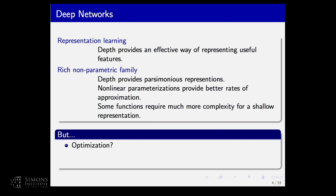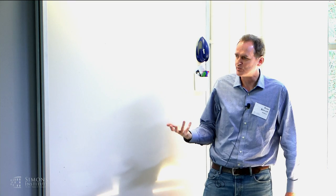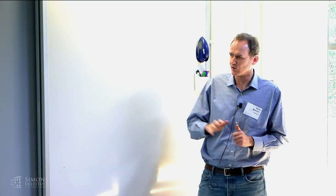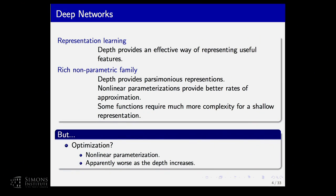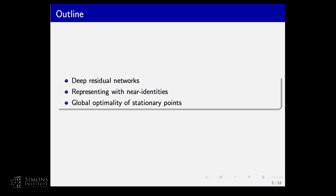The flip side is the optimization issue: if we have a training set and want to choose parameters to perform well on it, having parameters appear nonlinearly is an issue. We should expect optimization to become more difficult as depth increases. That's a focus of this talk. I want to focus on a specific class of networks that have been really successful in computer vision — deep residual networks — and discuss some representation properties and optimization properties of that family.